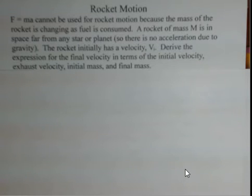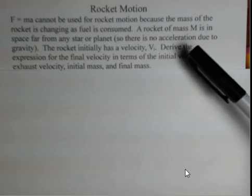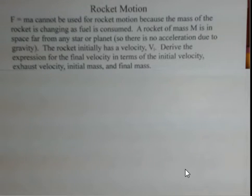So we're going to have to use the tools of calculus to help us find this final velocity. We're going to say that we have a rocket with a mass capital M. It's out in deep space, away from any star, away from any planet, so we do not have to include the acceleration due to gravity on the rocket.